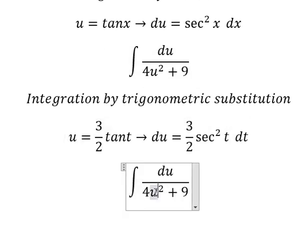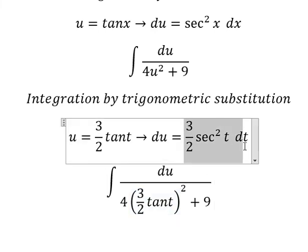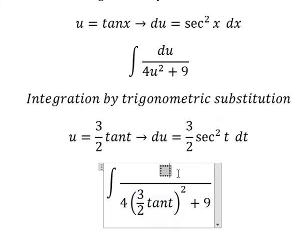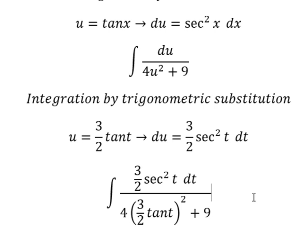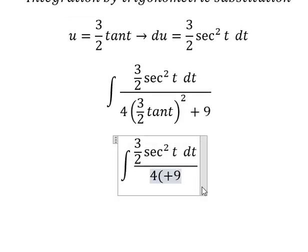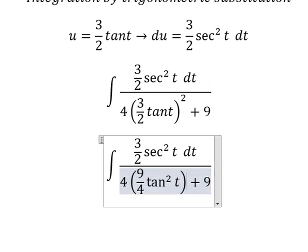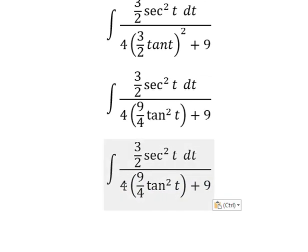So I will put this one here. Du we change by this one. This one we have nine over four times this. Number four, number four we cancel.